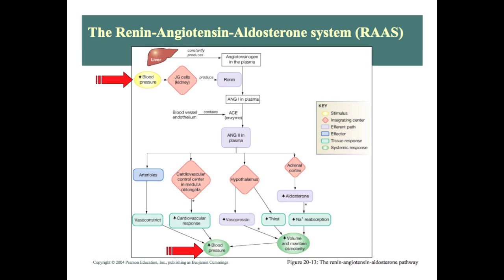At the level of the hypothalamus, angiotensin-2 increases vasopressin. Vasopressin is increased from the hypothalamus, and that increases volume and maintains osmolarity. It also increases thirst, so we drink more. When we drink more, our volume increases, and now we have higher blood pressure.